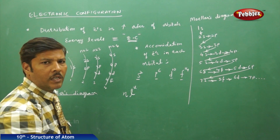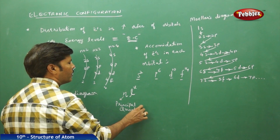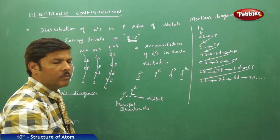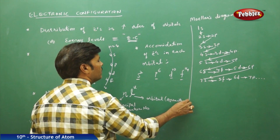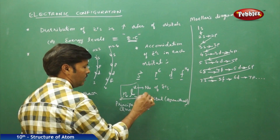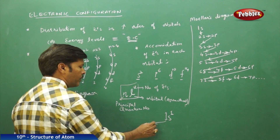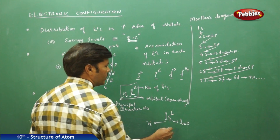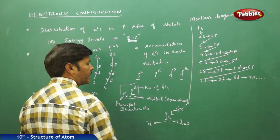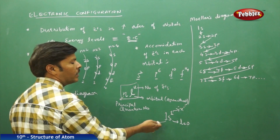In the NLX method, N represents the principal quantum number, L represents the orbital in which the electron is placed — that is the azimuthal quantum number — and X represents the number of electrons. For example, in 1s¹: 1 stands for the principal quantum number, s corresponds to azimuthal quantum number L=0, and the superscript 1 represents the number of electrons.